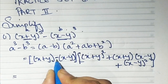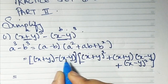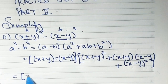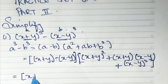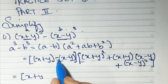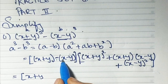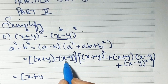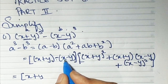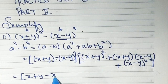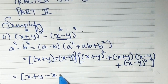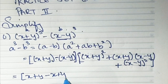When we open the bracket, there is a minus sign, so the signs in the second bracket are going to change. We take (x + y) as it is. Then minus sign: plus x becomes minus x, and minus y becomes plus y.